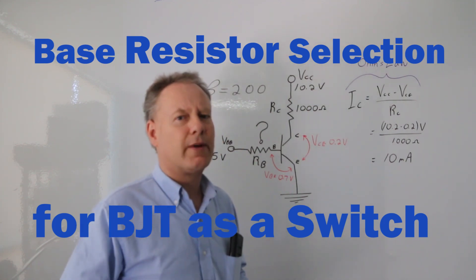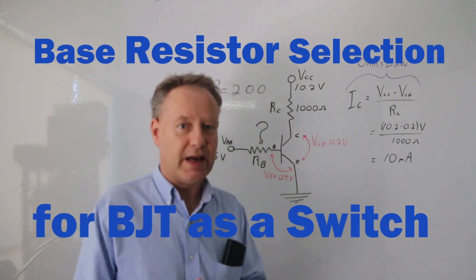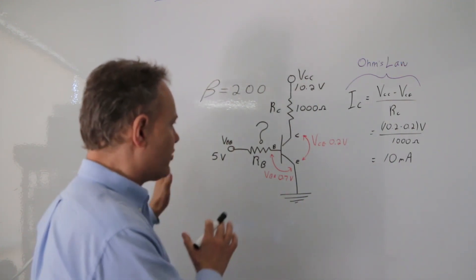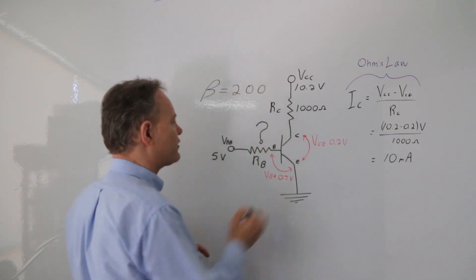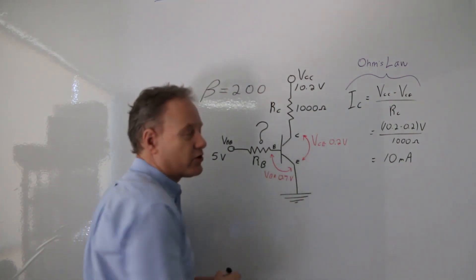What we're going to do is talk about a BJT and specifically about how to select the base resistor. So we have a bipolar junction transistor, it's an NPN transistor. I got my CE junction which is going to be 0.2 volts, which is pretty standard.